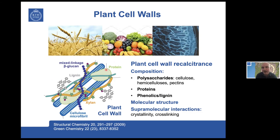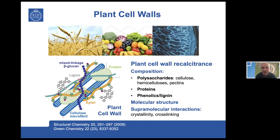All of these molecules have different molecular structures depending on the tissue, the variety, and the developmental stage. What is also important to understand is what contributes to plant cell wall function and recalcitrance — the different interactions between components: covalent cross-linking, hydrogen bonding, and non-polar interactions. Understanding the complexity of this system is what we want to achieve.